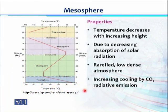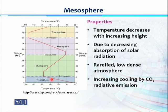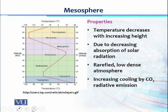One of the key properties is temperature. In the troposphere, temperature decreases with altitude; in the stratosphere, temperature increases with altitude. Then there is again a reversal in pattern — in the mesosphere, temperature decreases with increasing altitude. This decrease in temperature in the mesosphere is because of a decrease in absorption of solar radiation.